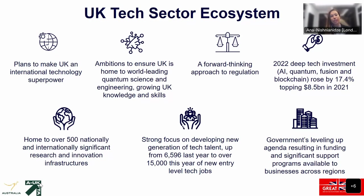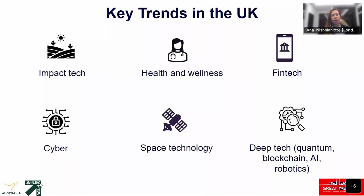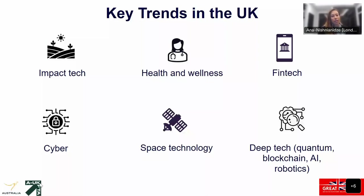That makes the UK quite an interesting market for Australian companies to consider. In terms of key trends and opportunities: first, impact tech — anything with strong social responsibility, sustainability, or environmental focus. There's a huge opportunity here as the UK has very clear targets around net zero transition. It focuses a lot on ESG credentials and works across industries to implement robust reporting and measurement of environmental and social contribution. Strong sustainability credentials are an absolute must-have requirement in the UK, which creates a lot of opportunities for businesses operating in that space.